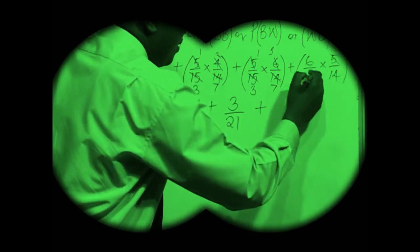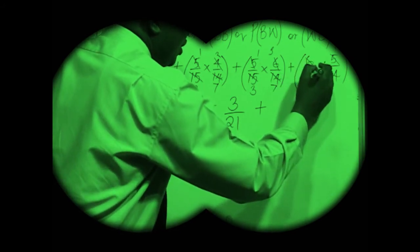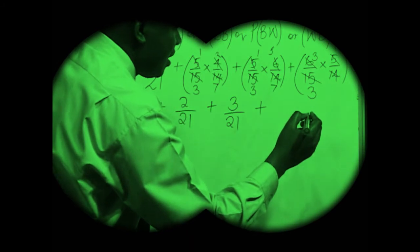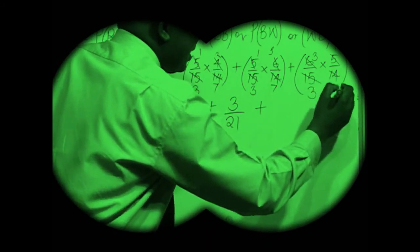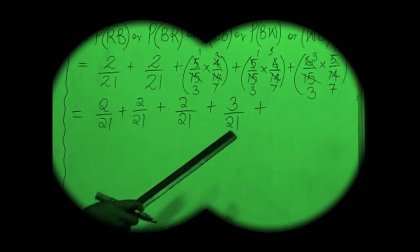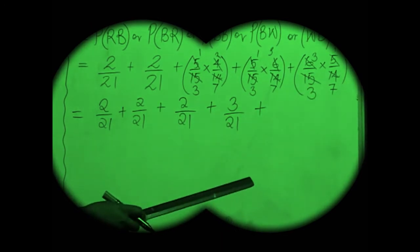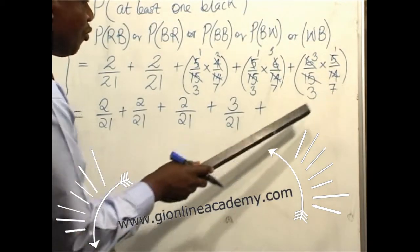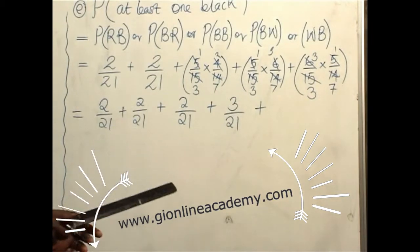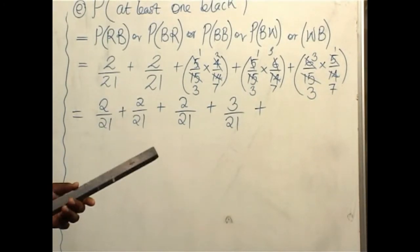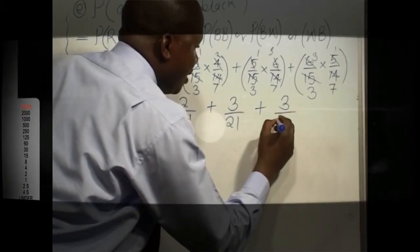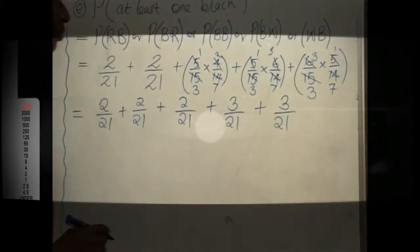And lastly, 5 divided by 5 is 1. 15 divided by 5 is 3. 6 divided by 2 is 3. 14 divided by 2 is 7. Much as we can simplify 3 and 3 to get 1, I would rather we leave it as it is so that the denominator for the result will also be 3 times 7, which is 21. So that throughout, our denominators will be 21 and it will be easier for us to evaluate.